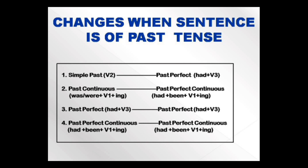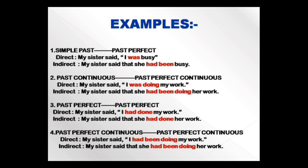For sentences already in past tense in the reported speech: simple past tense changes to past perfect tense, and past continuous tense changes to past perfect continuous tense. Past perfect tense and past perfect continuous tense have no change — they remain the same. For example: 'My sister said, I was busy' — simple past changes to past perfect: 'My sister said that she had been busy.' 'My sister said, I was doing my work' — past continuous changes to past perfect continuous: 'My sister said that she had been doing her work.'